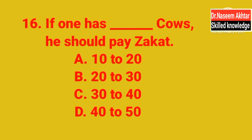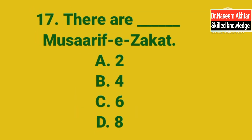MCQ 16: If one has dash cows, he should pay Zakat. کتنی گائیں ہونی چاہیے جس پر Zakat فرض ہے؟ A. 10–20, B. 20–30, C. 30–40, D. 40–50. The correct answer is C — 30 to 40. 30 سے 40 گائیں ہوں تو Zakat فرض ہے۔